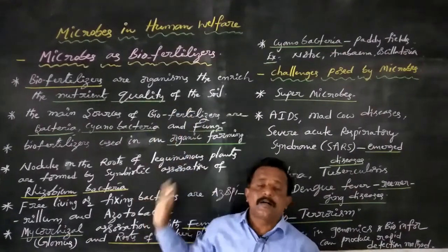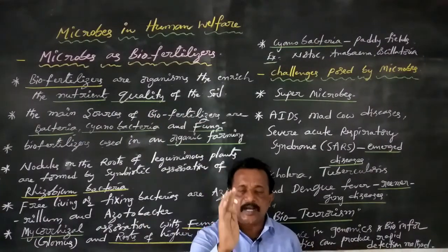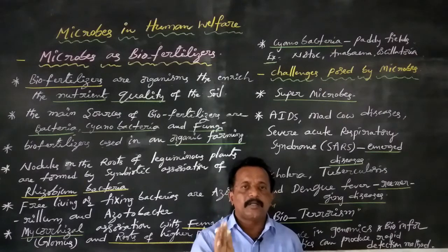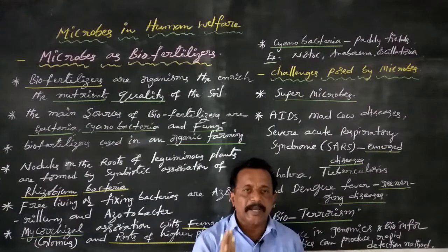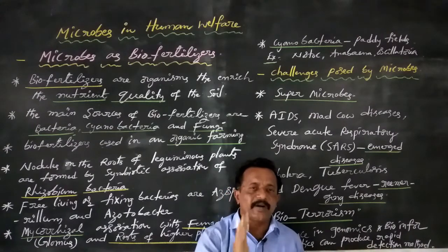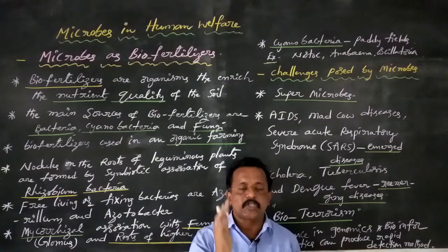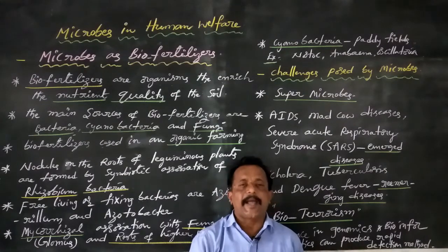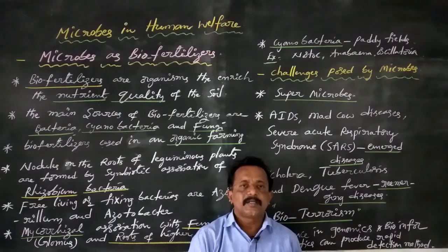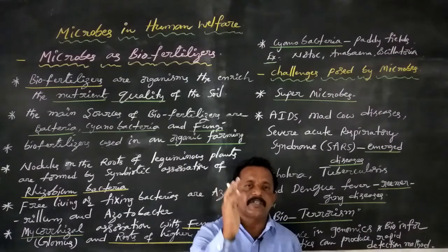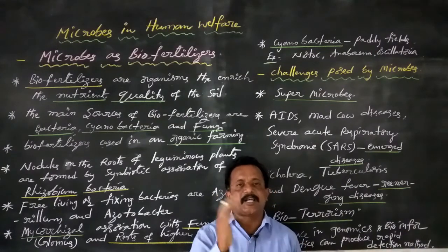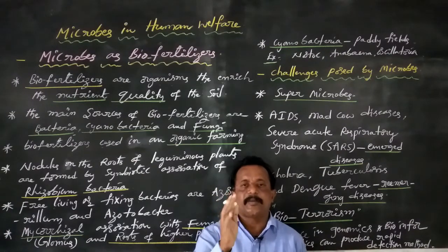These are the biofertilizer organisms: bacteria, Glomus fungi, and cyanobacteria. The bacteria — best examples are Rhizobium bacteria, Azospirillum, and Azotobacter — all fix atmospheric nitrogen and convert it into organic forms. Glomus fungus absorbs phosphorus from the soil and passes it into the plant. Cyanobacteria such as Nostoc, Anabaena, and Oscillatoria add organic matter and make the soil fertile.